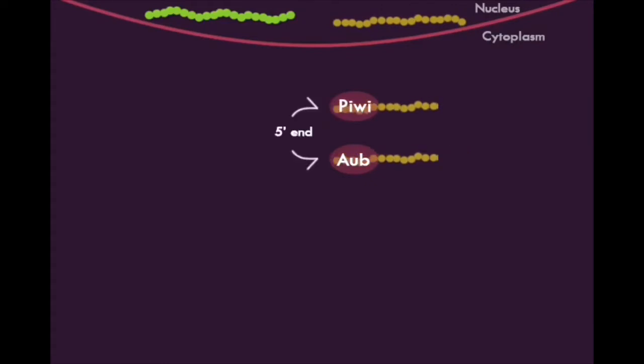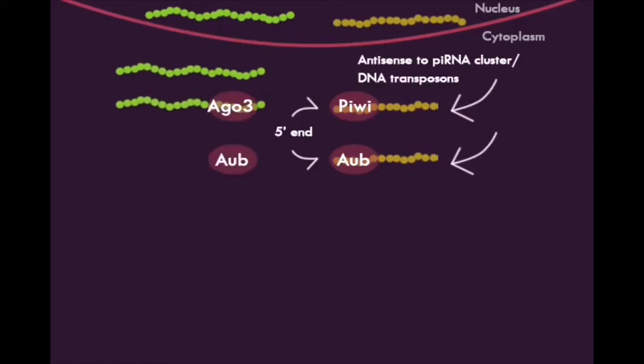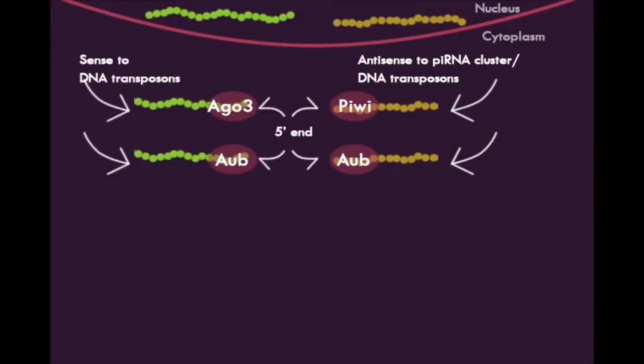PIWI and Aubergine show a strong preference for the 5' uracil end on the primary antisense PI-RNA transcript, whereas Argonaute 3 and Aubergine show a strong preference for the primary sense PI-RNA transcripts transcribed from transposon sequences.